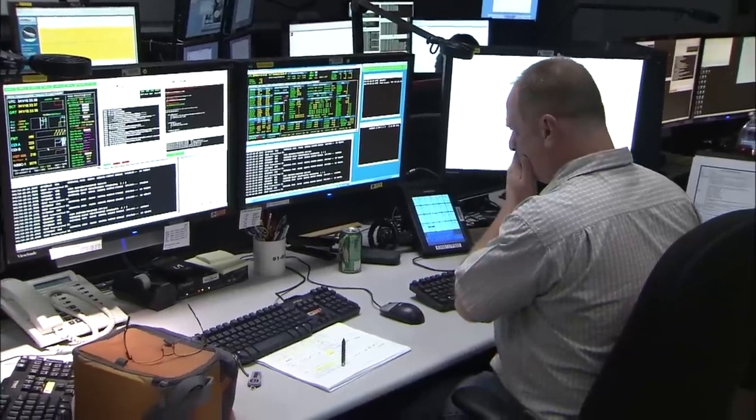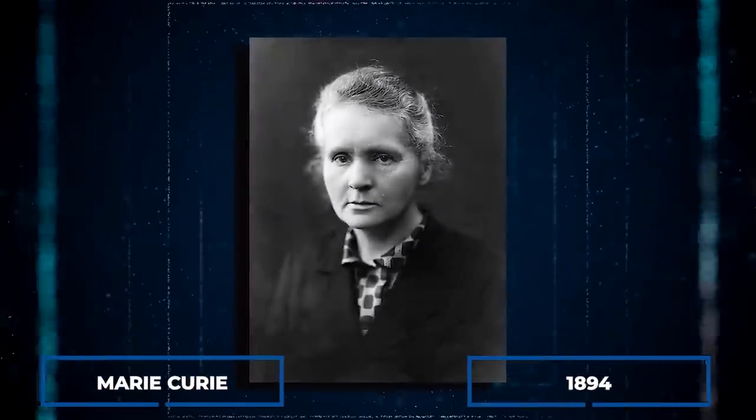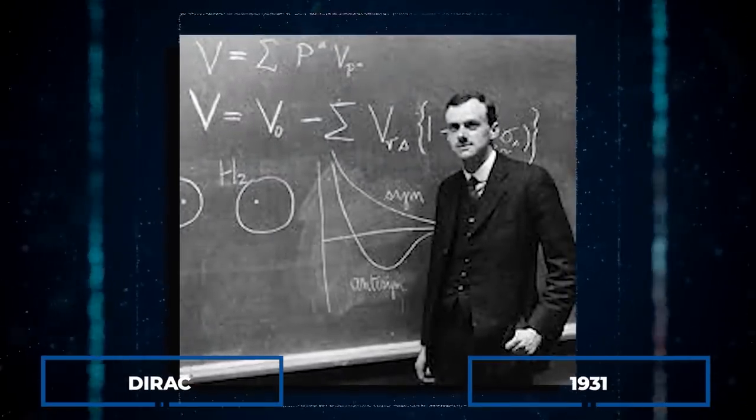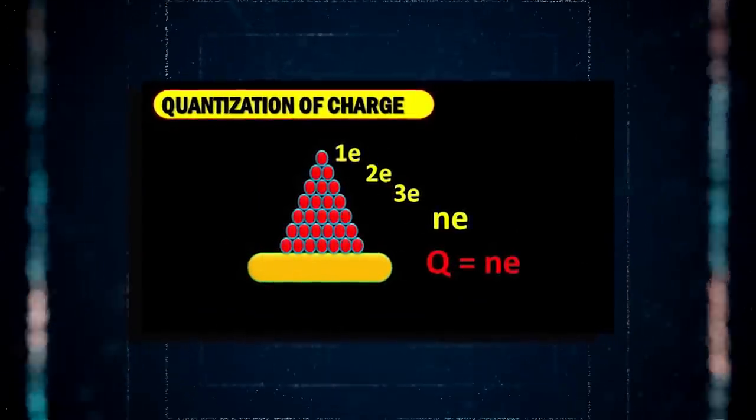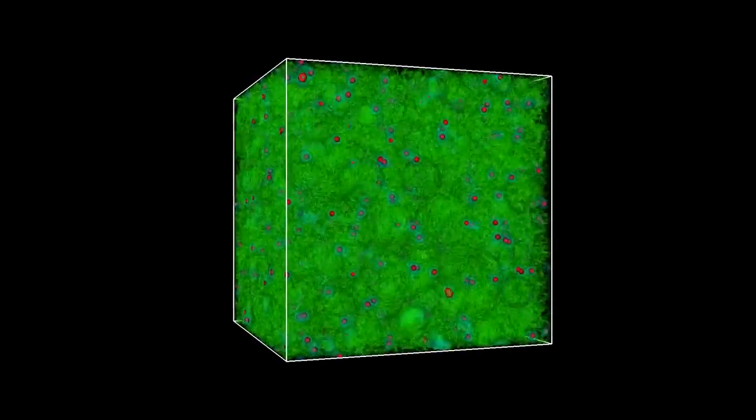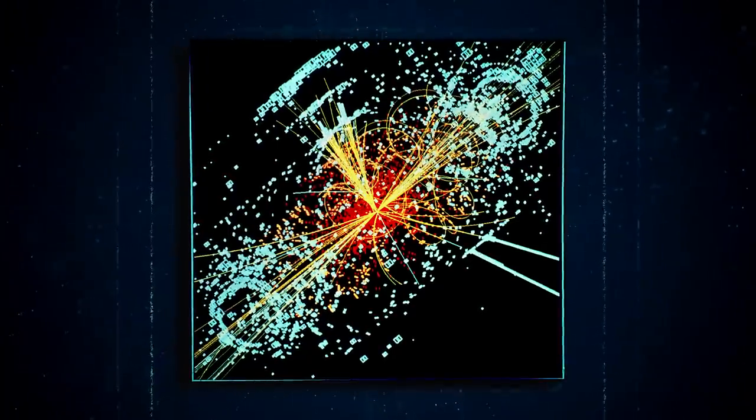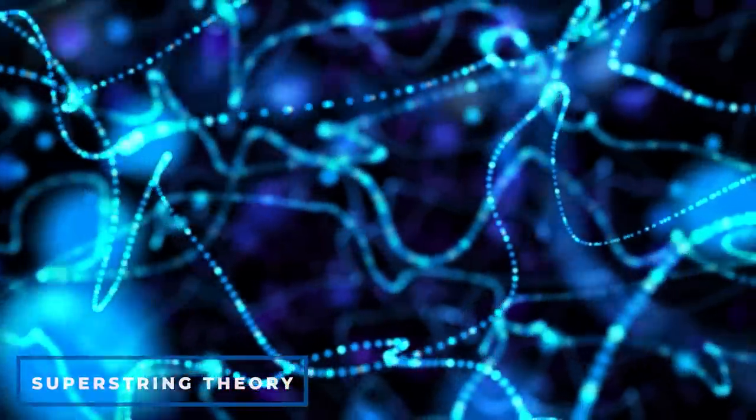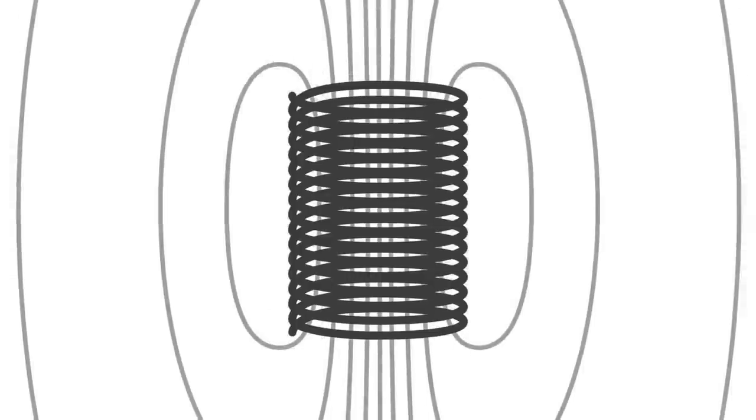However, there are compelling theoretical reasons to suppose that they should exist. Magnetic monopoles were occasionally used as mathematical examples in electrodynamics, but physicists only began to take them seriously after Dirac demonstrated in 1931 that their existence would explain the observed quantization of electric charge. They are an unavoidable prediction of the grand unification of elementary particle interactions. Finding a magnetic monopole particle would be a huge step forward in high-energy physics. They would be quite simple to examine experimentally.